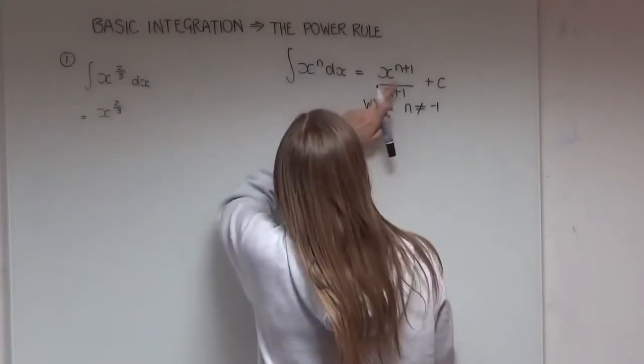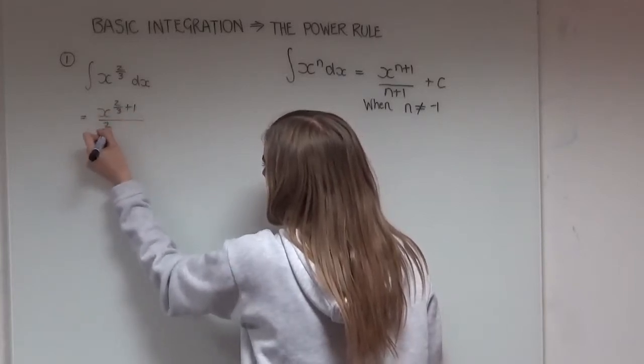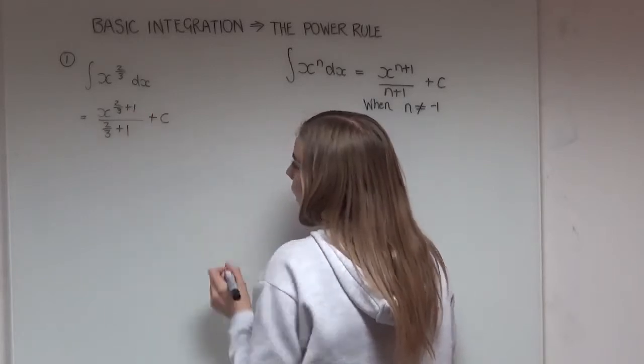So we add 1 to that power and then we divide it all by our power plus 1, and then we have our constant of integration there as well.